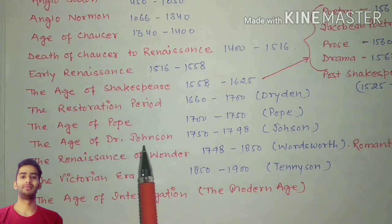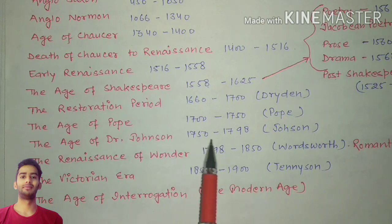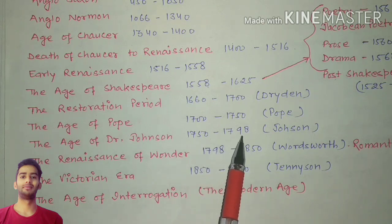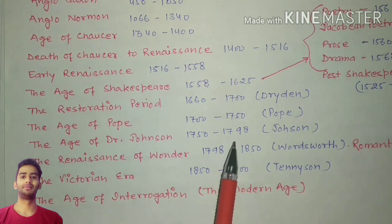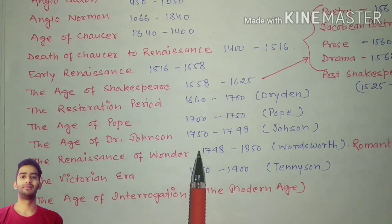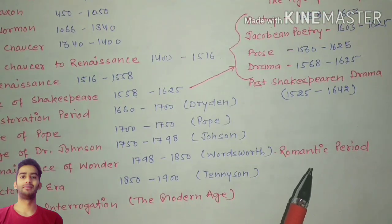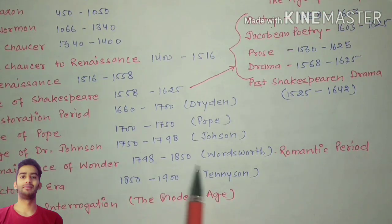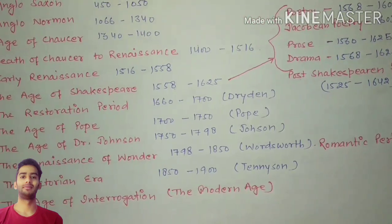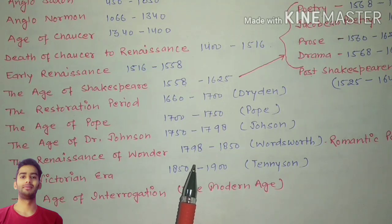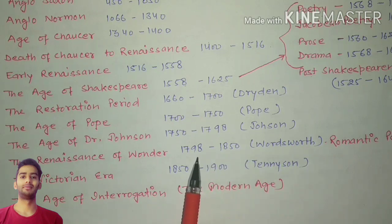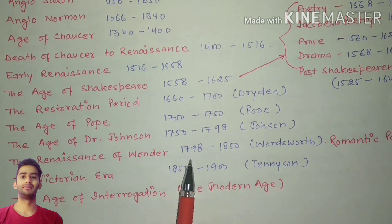The Age of Dr. Johnson is 1750 to 1798. 1798 is the starting point of the Renaissance of Wonder, also called the Age of Verse, the Romantic Period, or Romanticism — all refer to the same era. 1798 is considered the starting point of the Romantic Period because in this year Lyrical Ballads was published.